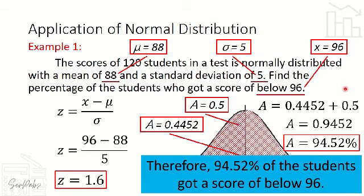Therefore, 94.52% of the students got a score below 96. That is the answer for Example 1.